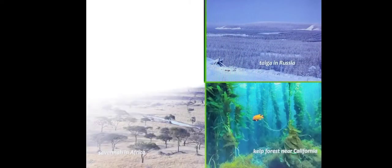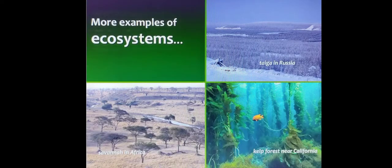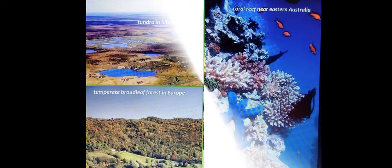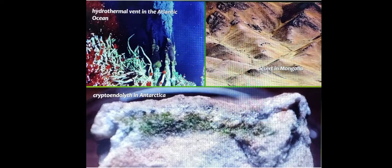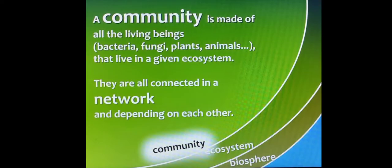Our earth is made up of different ecosystems like taiga in Russia, savanna forest in Africa, or coral reef ecosystem, or tundra ecosystem. All ecosystems are different — a desert ecosystem, or an ecosystem found inside the ocean, or an ecosystem found in Antarctica — all with different criteria.